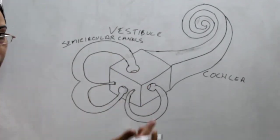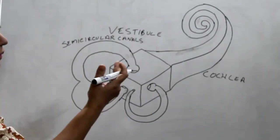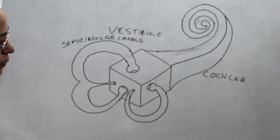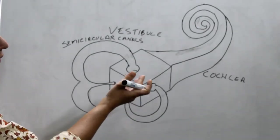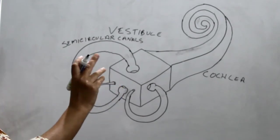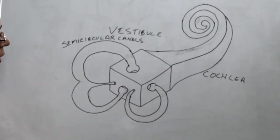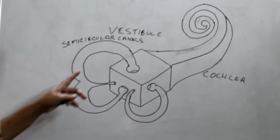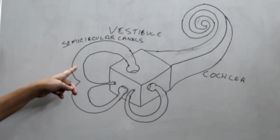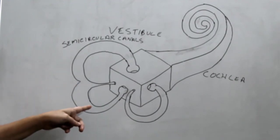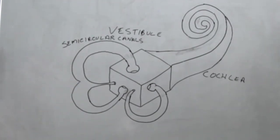The vestibule — laterally there is the oval window and the oval window niche. And medially there are two recesses: the spherical recess and the elliptical recess. And the superior and the posterior semicircular canal — and this is the lateral or the horizontal semicircular canal.